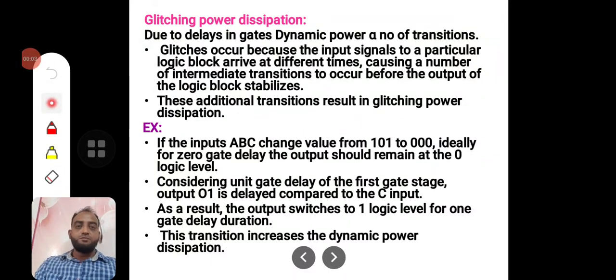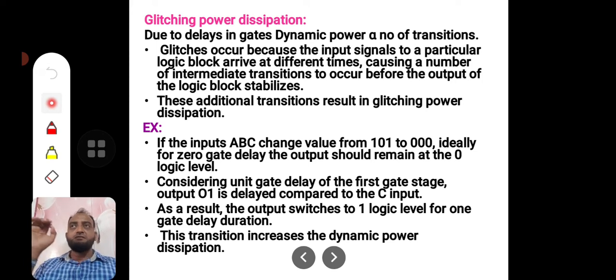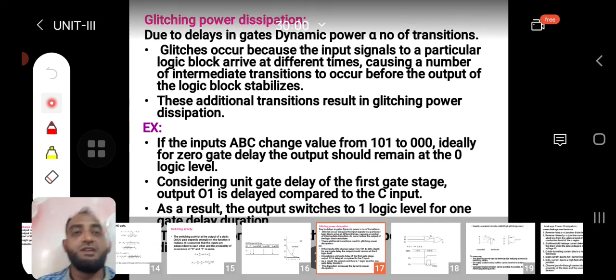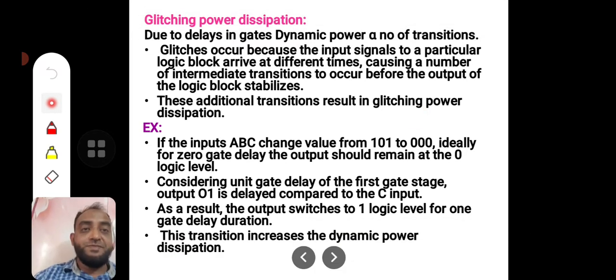Hello, welcome to my video lectures. In this lecture we will discuss glitching power dissipation. Glitching power dissipation happens because of the finite delays that are happening within the circuit nodes. Due to the delays in the gates, dynamic power is proportional to number of transitions.